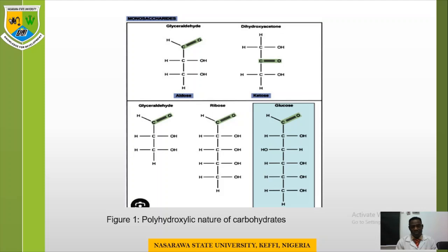According to Figure 1, showing the polyhydroxylic nature of carbohydrates, the linear structures of carbohydrate compounds are on display. We have glyceraldehyde, a three-carbon compound, and glycerose, another three-carbon compound, but with a different functional group. Glyceraldehyde contains an aldehyde group, while glycerose contains a ketone. Then we have ribose, which contains four carbon atoms, and we have glucose, the commonest among them, which we call a hexose sugar because it contains six carbon atoms.